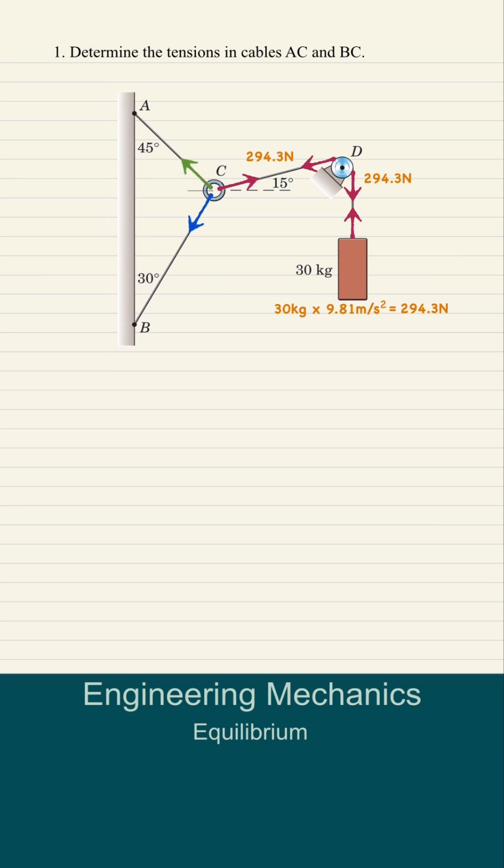Now we can draw the free body diagram at point C with forces AC, BC and 294.3N. Using the parallelogram law, we can simplify the forces into an equivalent triangle.